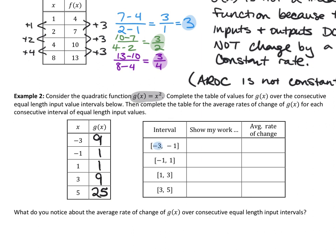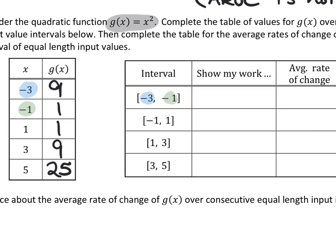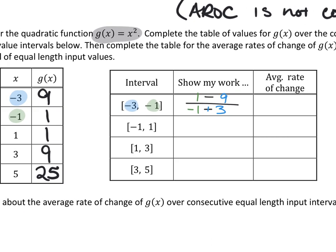The first interval is between negative 3 and negative 1. To show my work, the average rate of change is the second x minus the first x on the bottom, and the y-values that go with those numbers on the top. What is one minus nine? Negative eight. What is negative one plus three? Two. So negative eight divided by two is negative four. The average rate of change for the interval between negative 3 and negative 1 is negative four — a downward tangent slope.